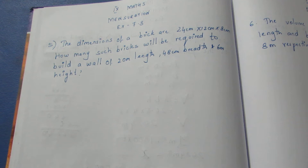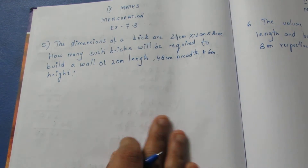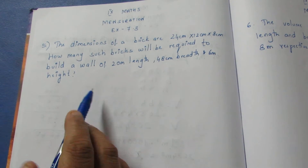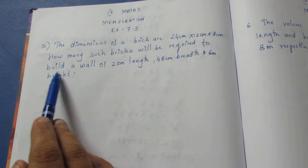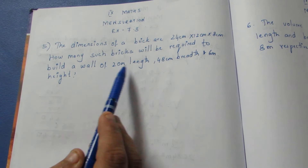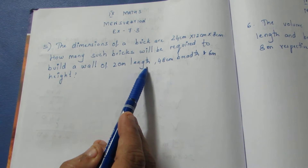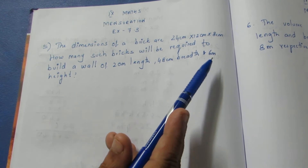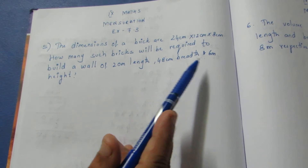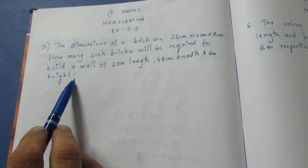The dimensions of a brick are 24 cm, 12 cm, and 8 cm. How many such bricks are required to build a wall of 20 meters in length, 48 cm in breadth, and 6 meters in height?